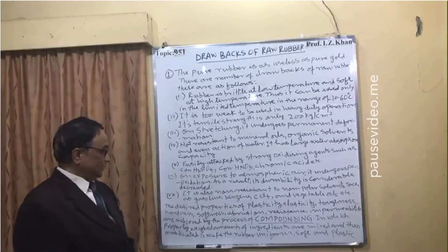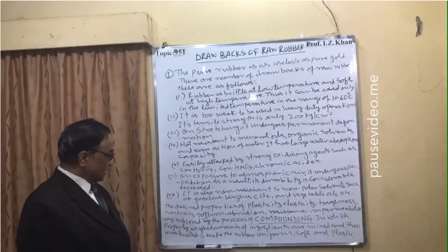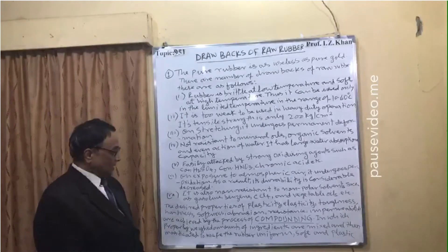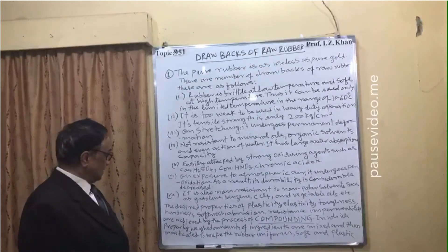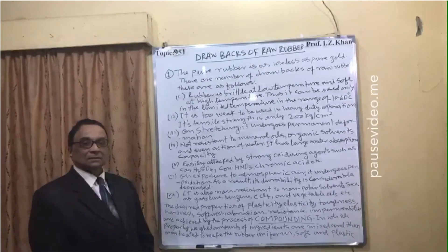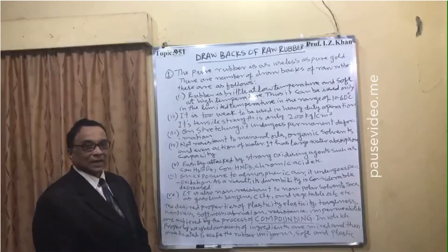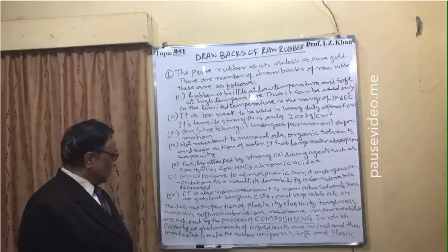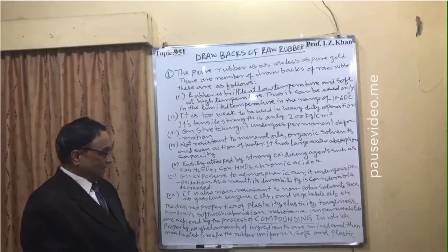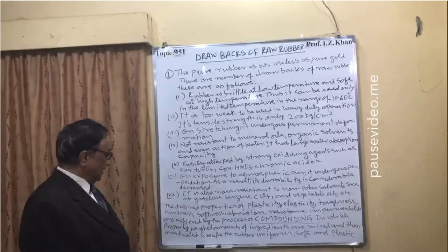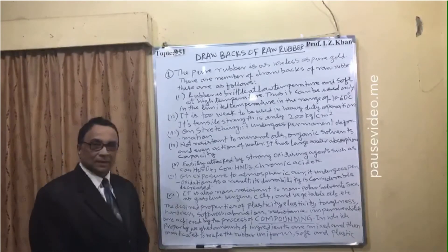The desired properties of plasticity, elasticity, toughness, hardness, softness, abrasion resistance, and impermeability are achieved only by the process of compounding. Compounding involves the addition of various chemical ingredients in properly weighed amounts, which are then mixed and masticated to make the rubber uniform, soft, and plastic.